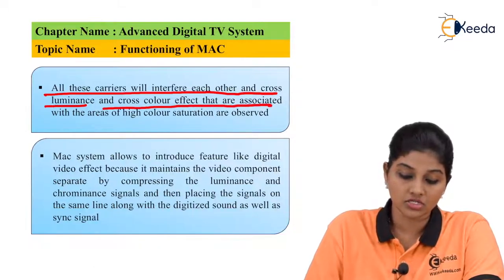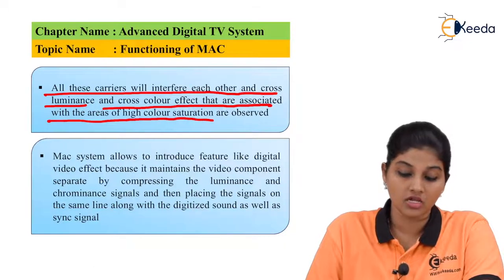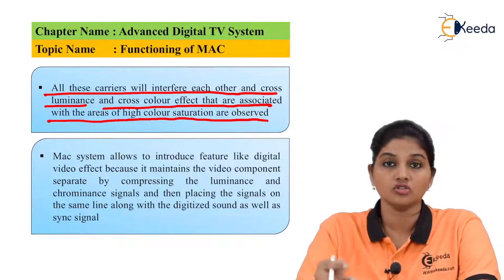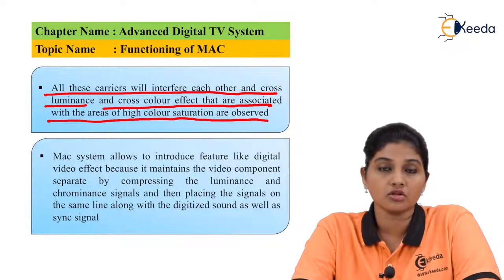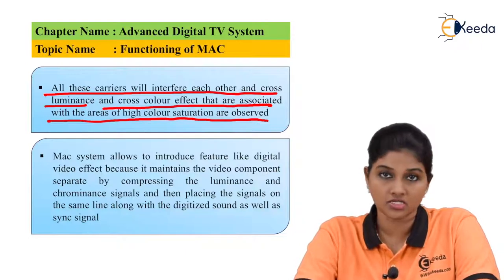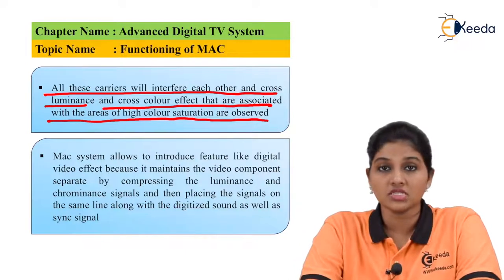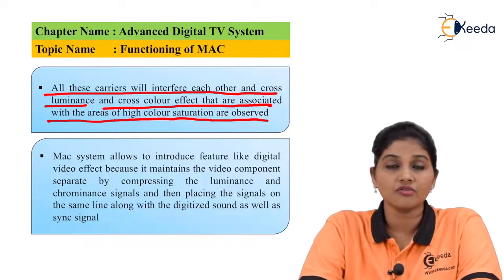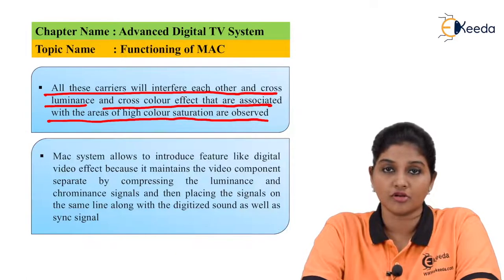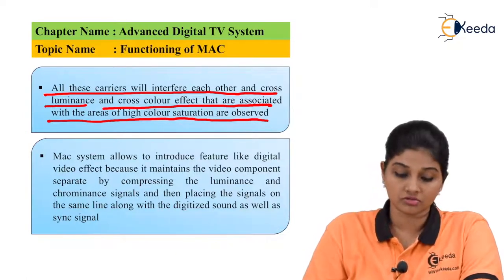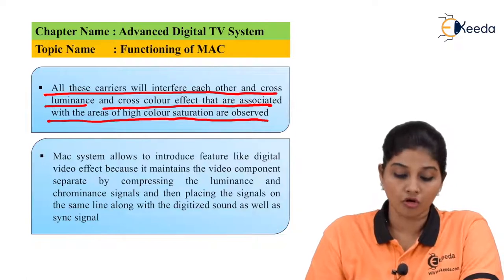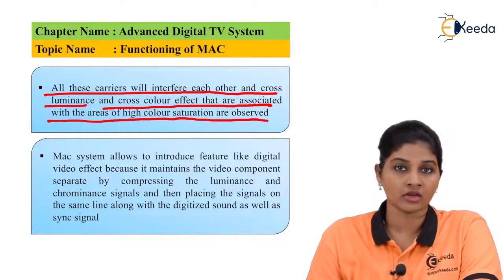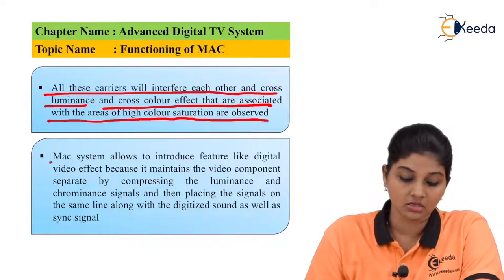All these carriers will interface with each other, and cross luminance and cross color effects associated with areas of high color saturation are observed. If the sound signal is monophonic, only one carrier is transmitted, whereas if the sound is stereophonic, two signals are required to be transmitted. When all these carriers are interfaced with each other, cross color and cross luminance effects are observed.